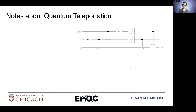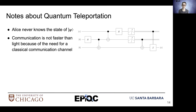Some notes about quantum teleportation: Alice never knows the state of the message qubit psi. She transmits it without knowing it and performs operations on it without knowing it — the only thing she knows is the results of measurement. Communication here is not faster than the speed of light because of that dependence on the classical communication channel, and that's a common misconception about quantum teleportation.